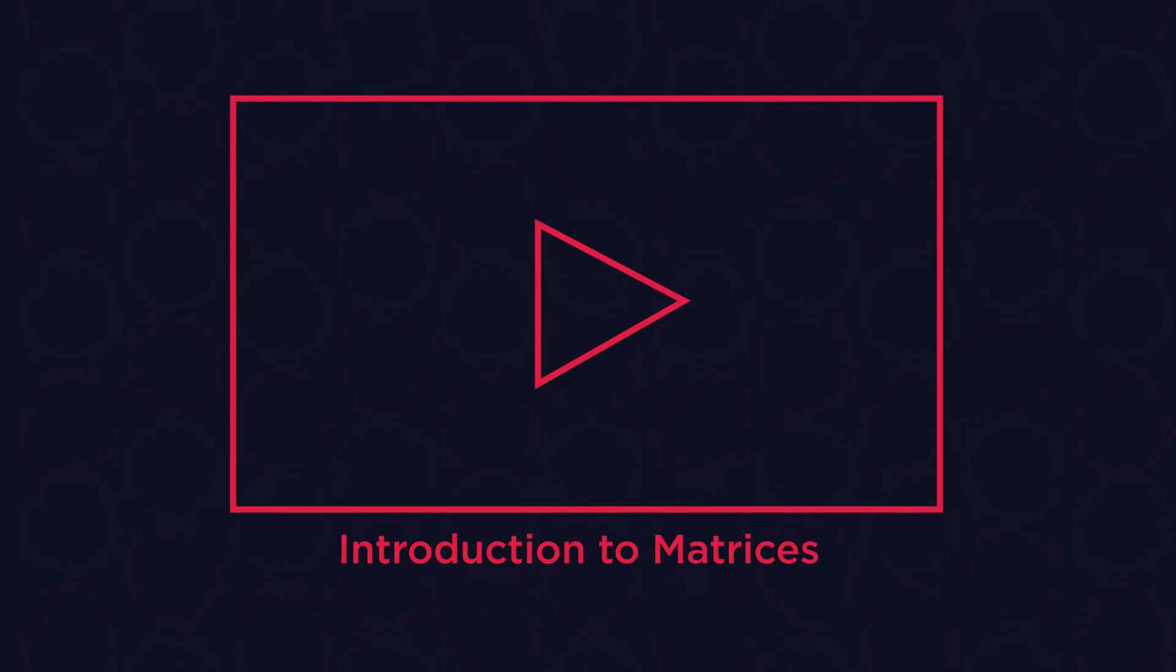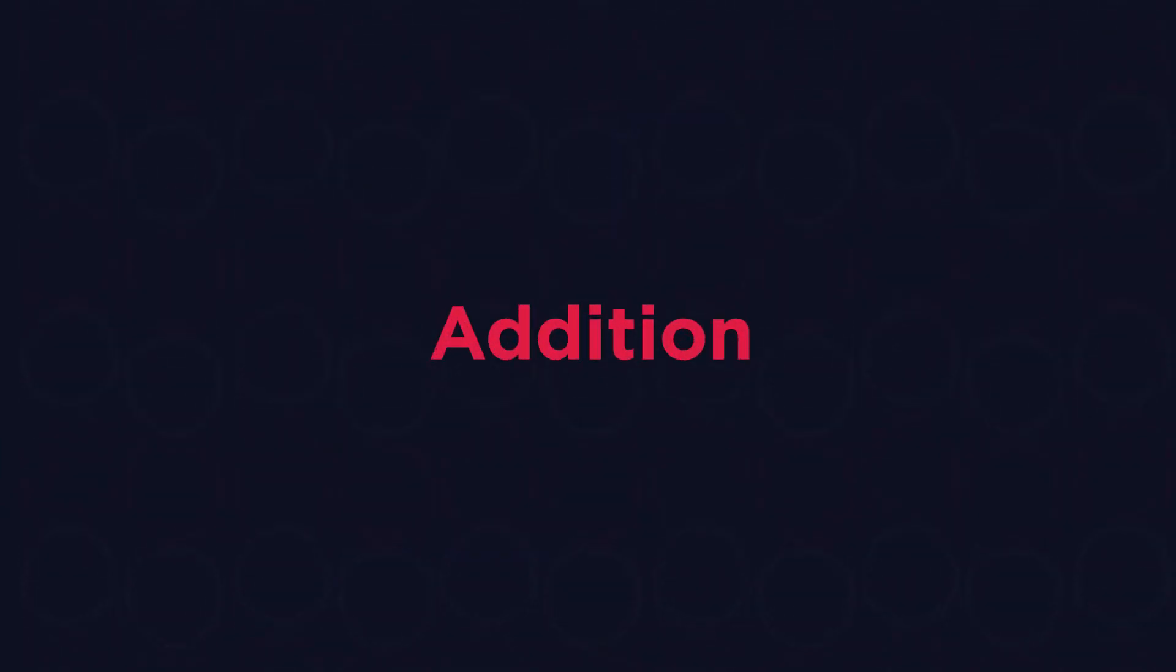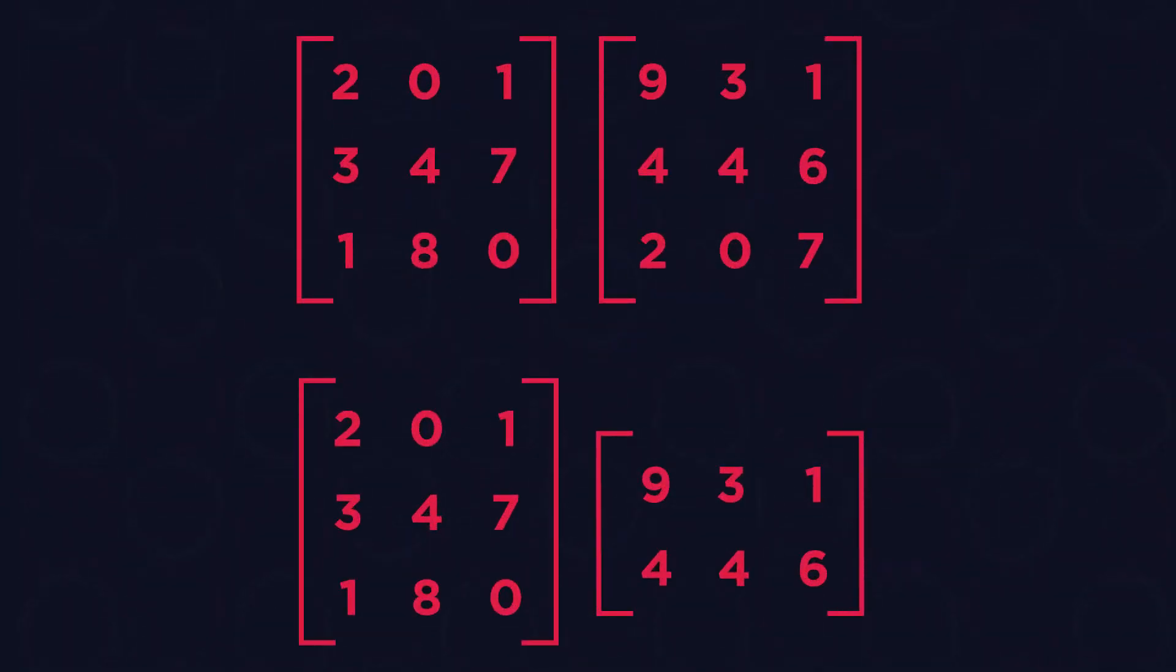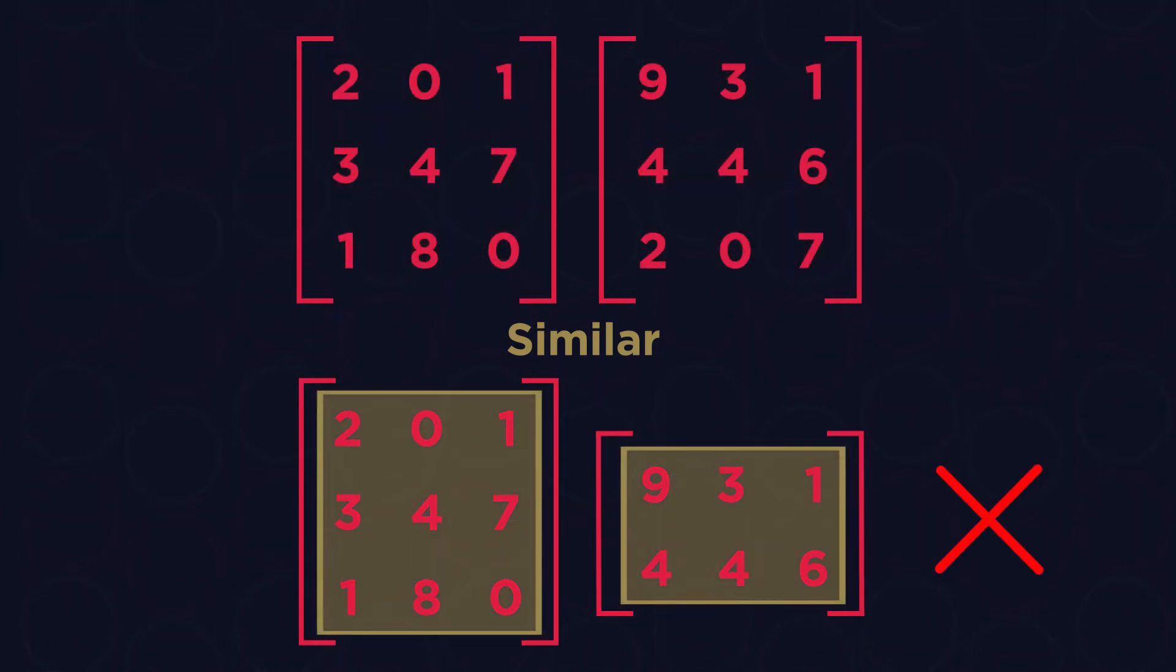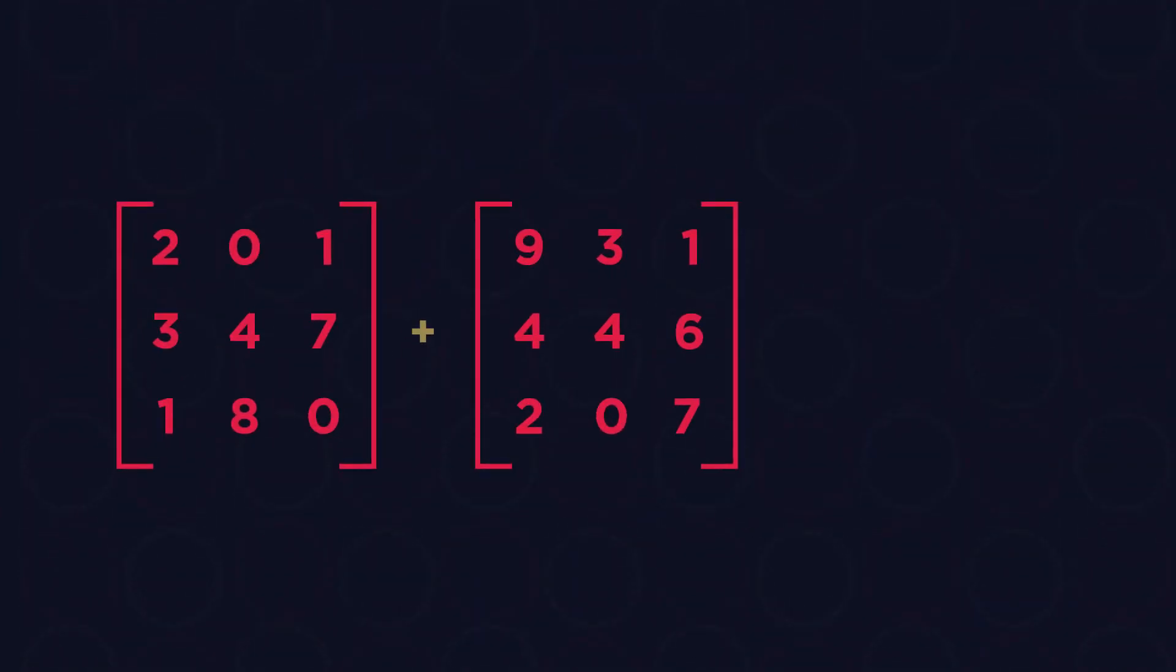First up is addition. Here you can see two different pairs of matrices. The first one is made up of two similar ones, which means that they have the same number of rows and columns, while the second one isn't. A very important thing to understand is that in order to add up two matrices, they must be similar. Therefore, we can add up the first pair but not the second.